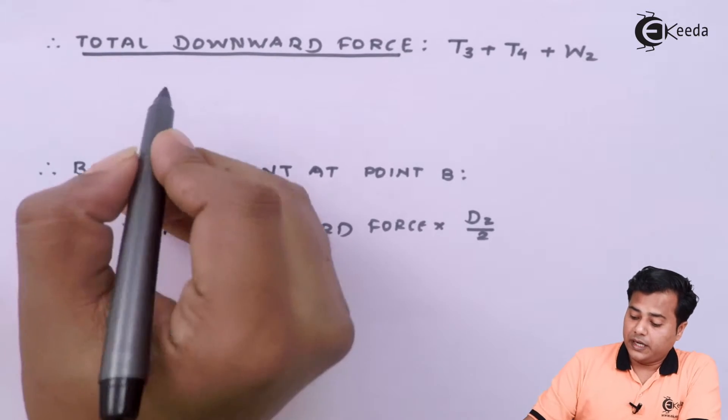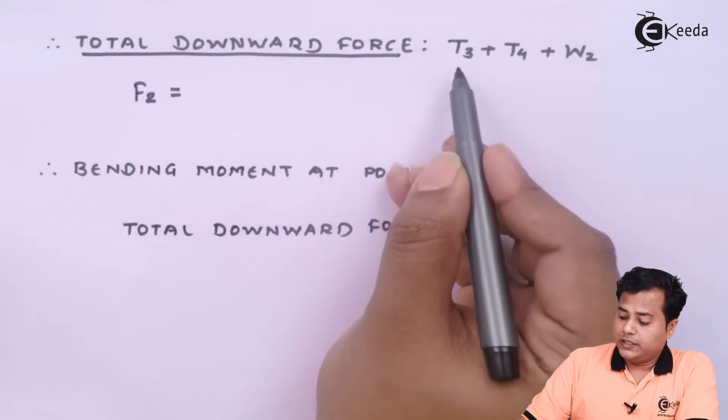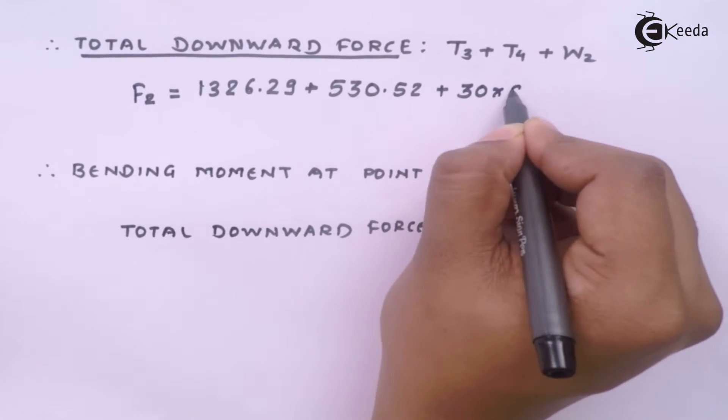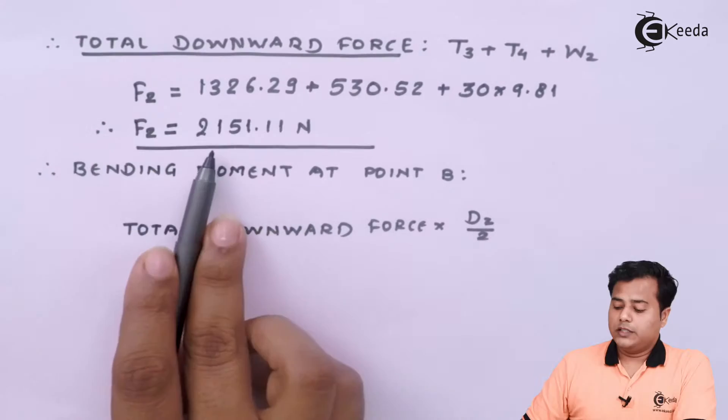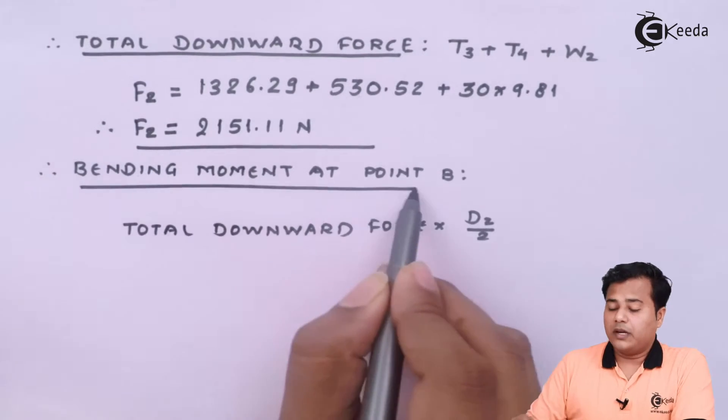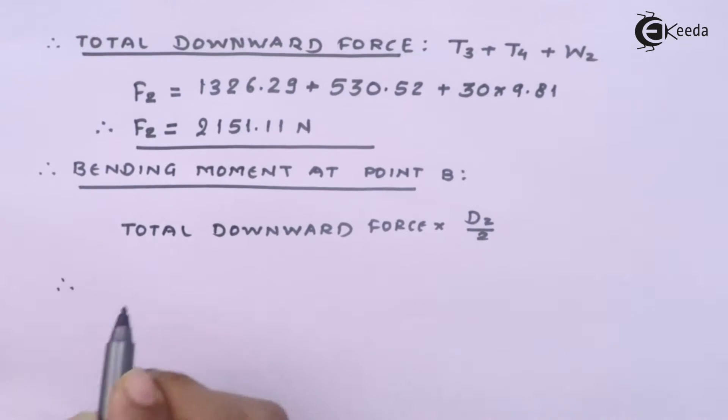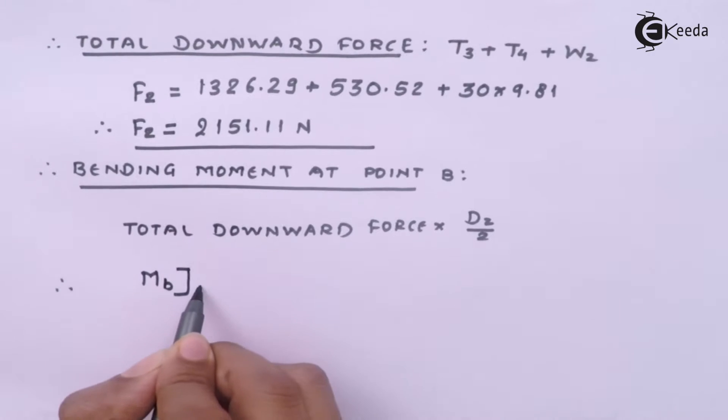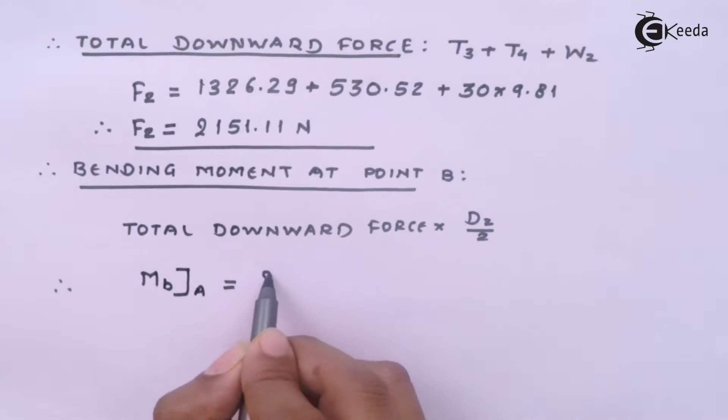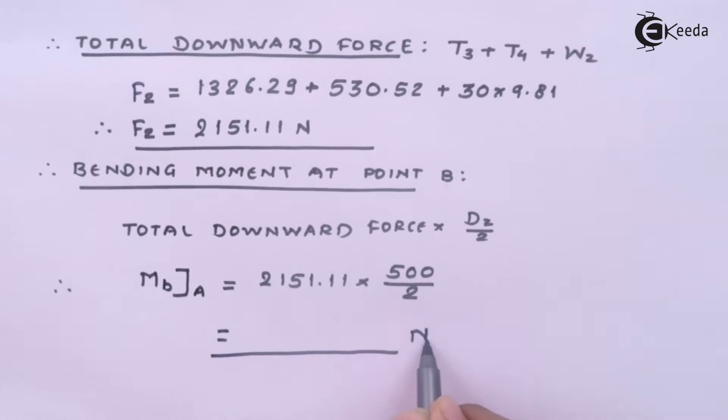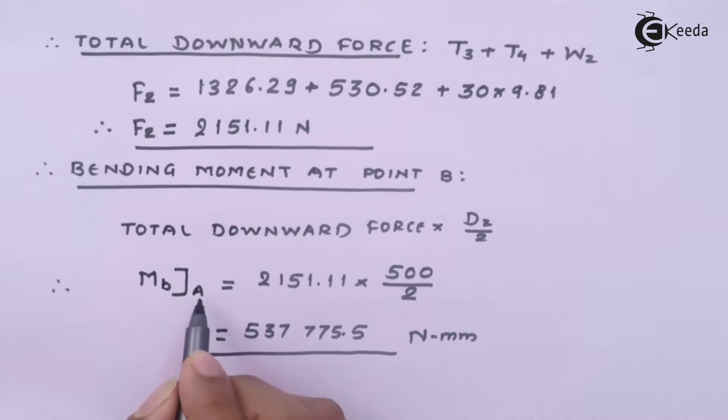The total downward force acting on pulley number 2 becomes Force 2, which equals T3 plus T4 plus the weight of the pulley, that is 30 kg times 9.81. The bending moment about point B equals the total downward force times diameter 2, which is 500 divided by 2, and the answer is in newton-millimeters. This is the total bending moment about point B.